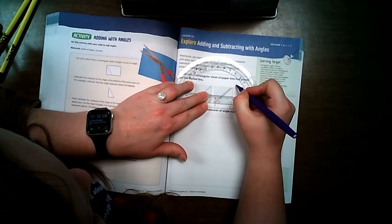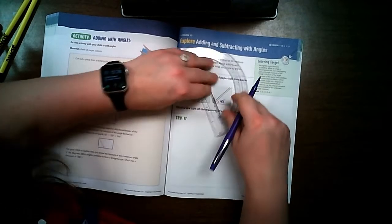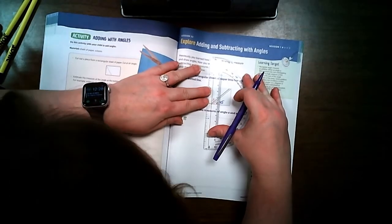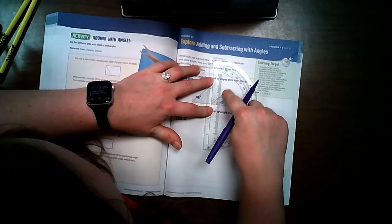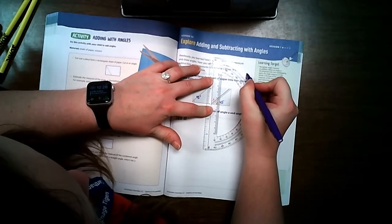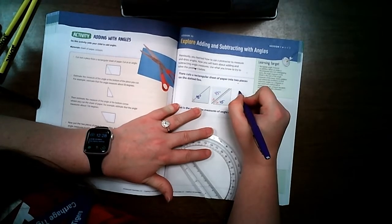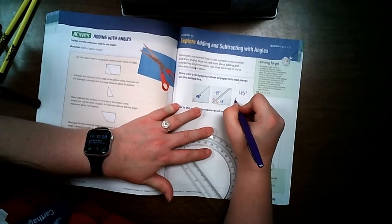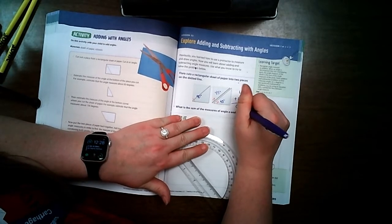I'm going to measure this one first. And it measures right at 45 degrees. Now I'm going to measure this angle. And it measures right at 45 degrees. So if I add 45 degrees plus 45 degrees together, I still get 90 degrees.